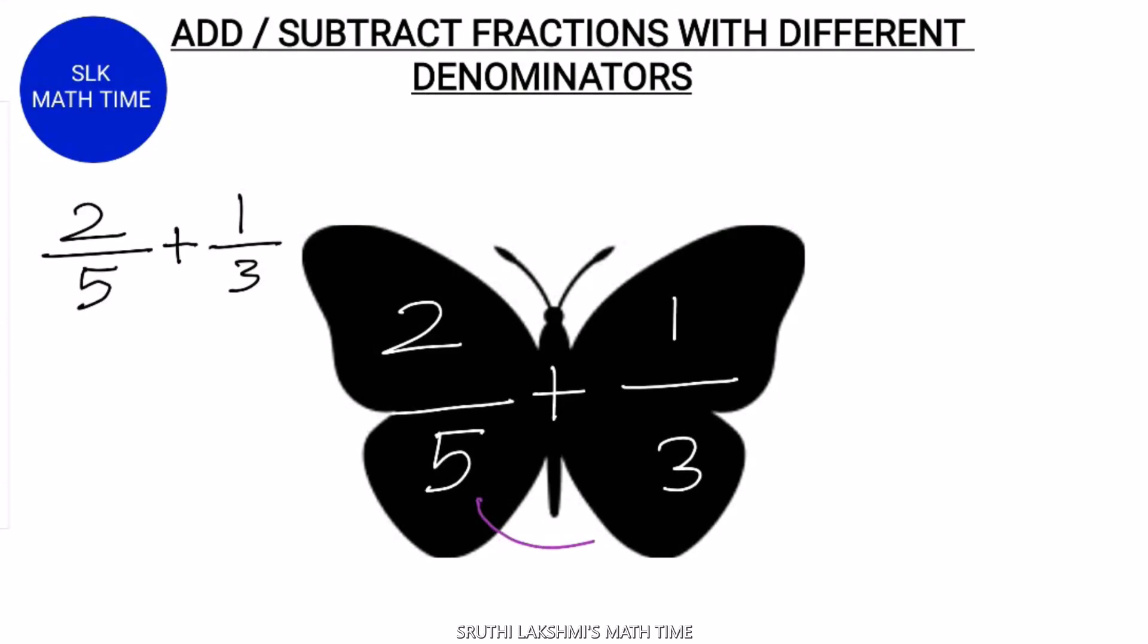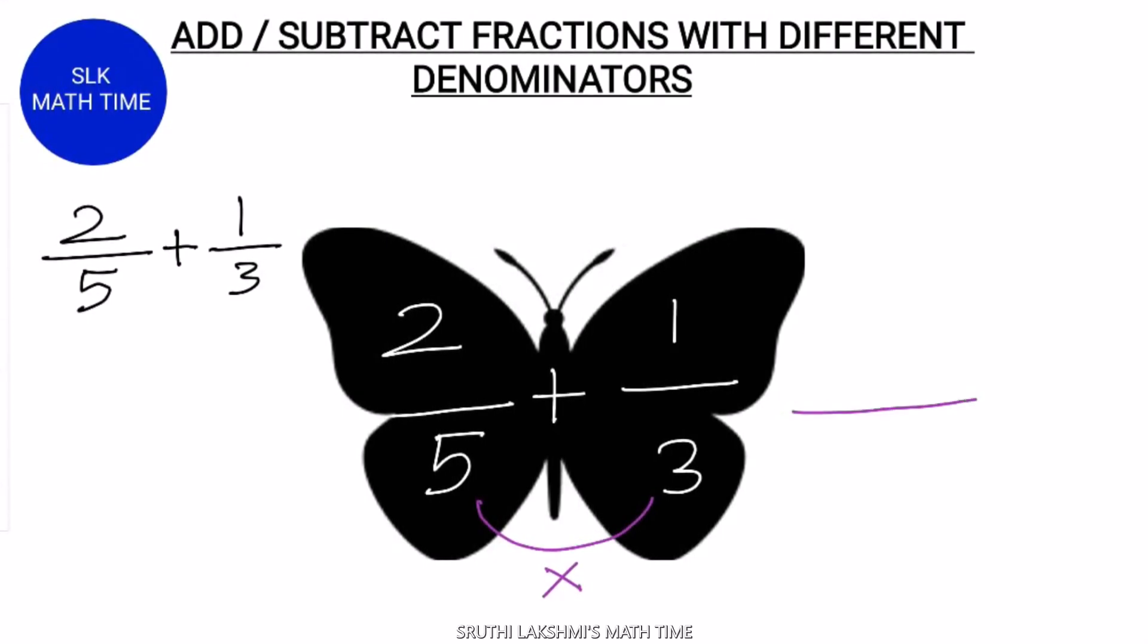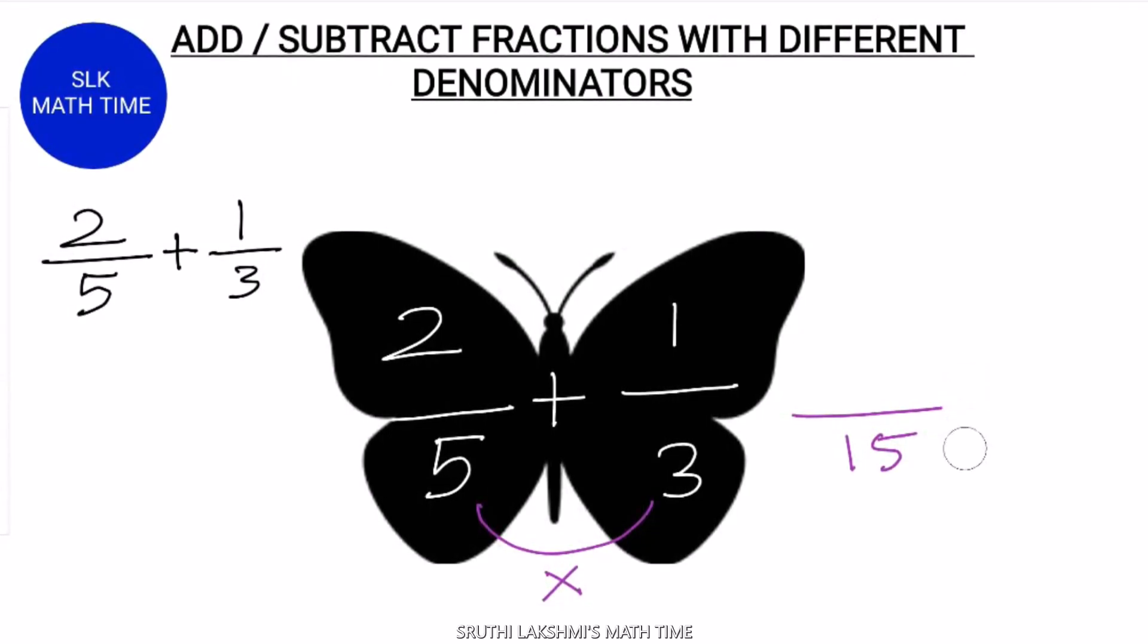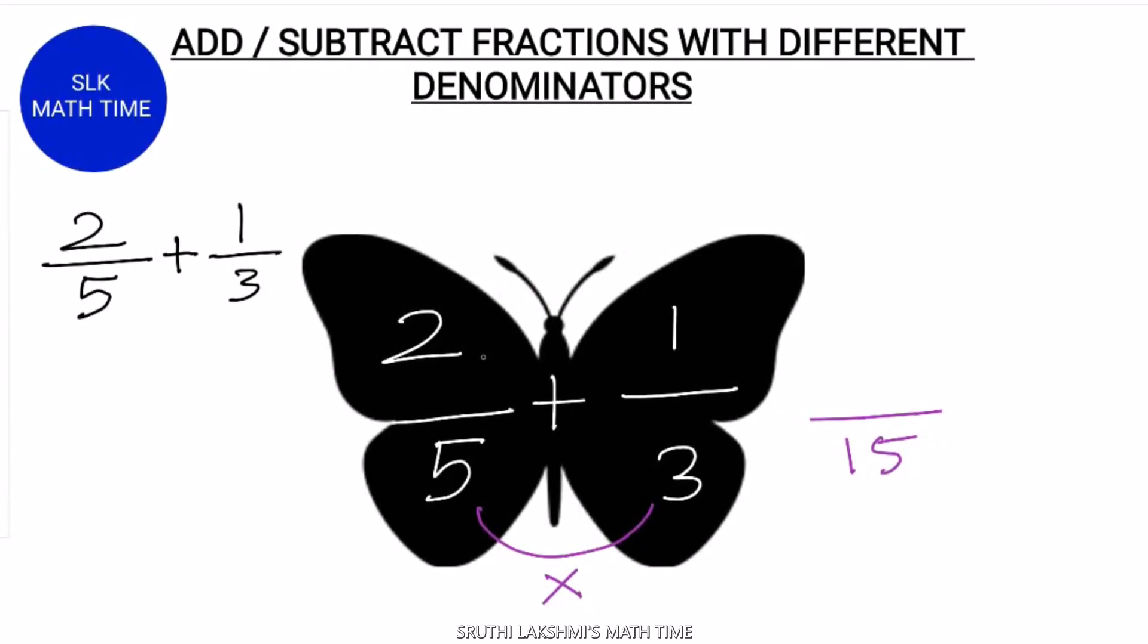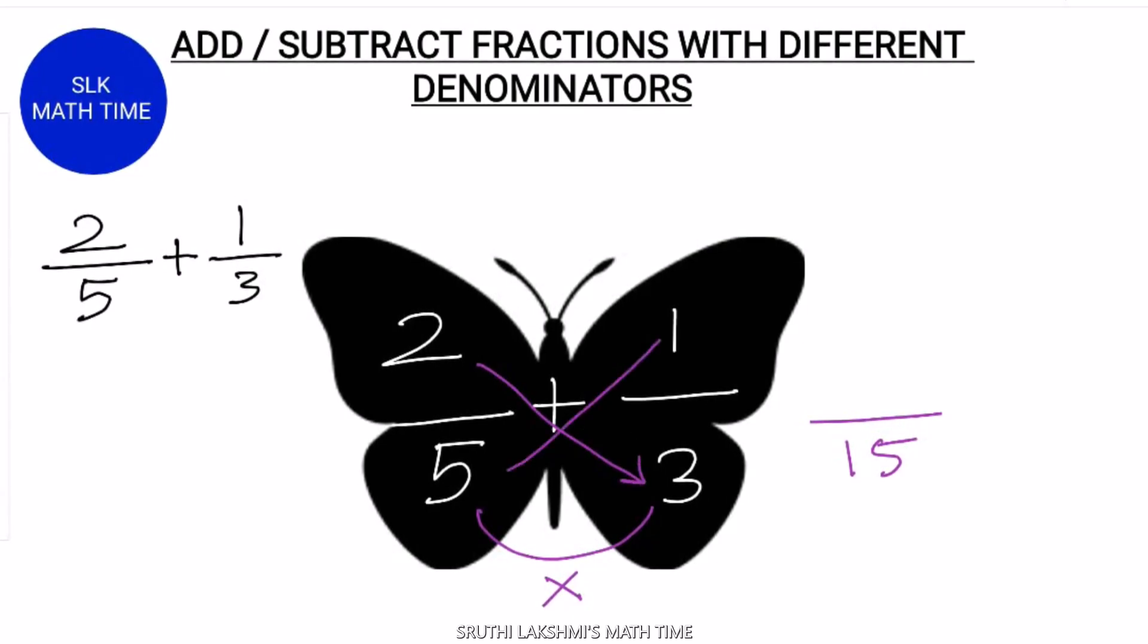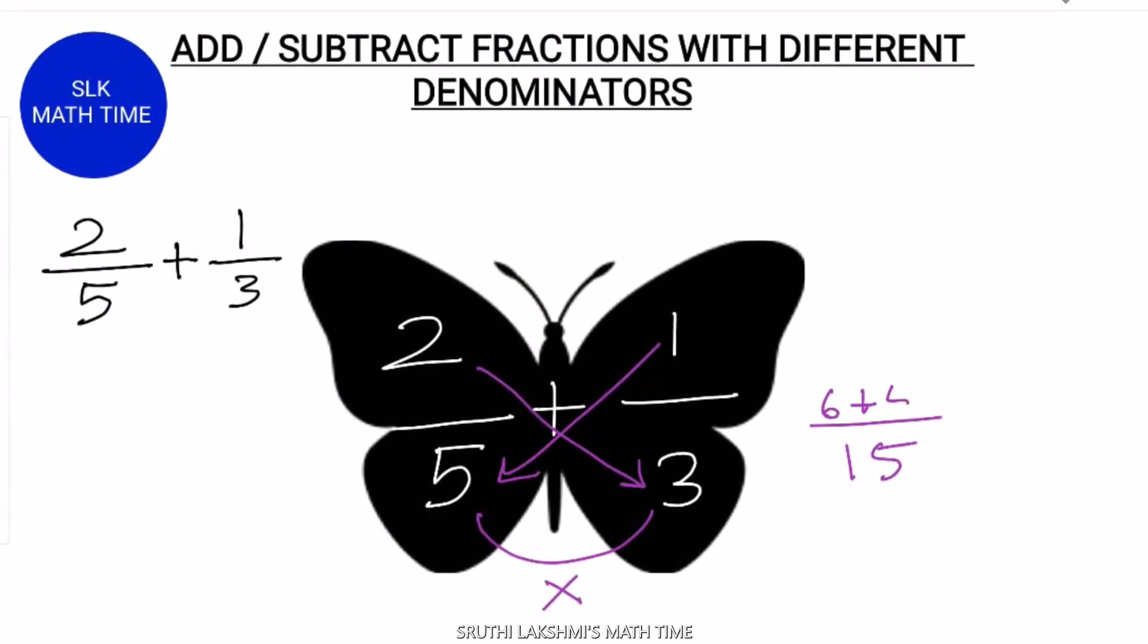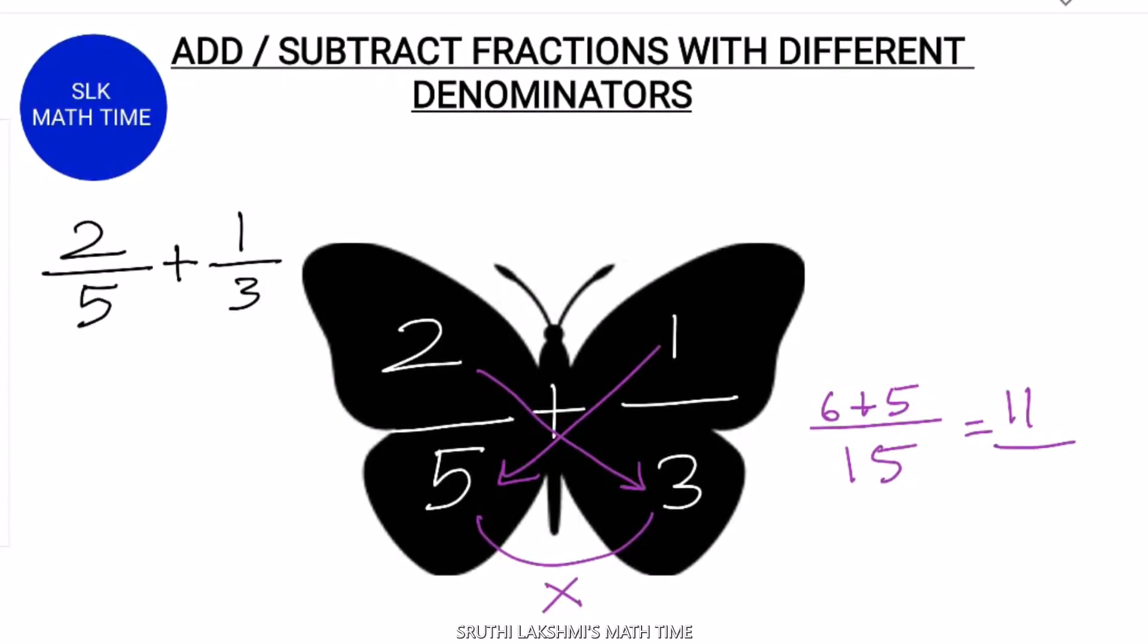First, multiply the denominators. 5 into 3 which is 15. So the answer's denominator will also be 15. Now, next cross multiply 2 into 3 and 1 into 5. 2 into 3 is 6 and 1 into 5 is 5. 6 plus 5 is 11 by 15.